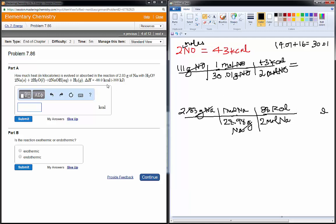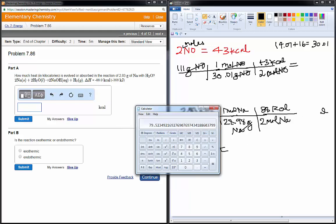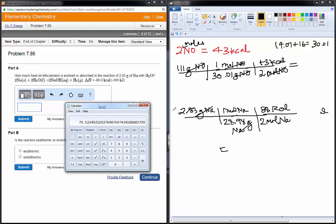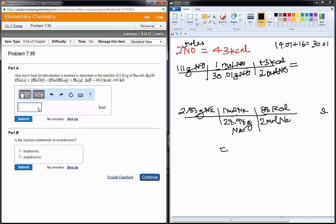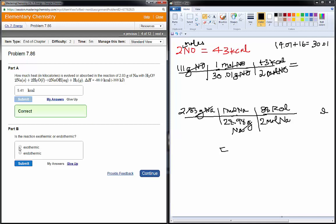Now, do I need to put the negative sign? No, the negative sign just tells me that it's being released. So, I can remember that whatever this answer is, that's the amount of heat being released. I don't have to include that negative sign. So, 2.83 divided by 22.98, multiplied by 88 kcals per 2 moles, gives me 5.41 kcals of heat.